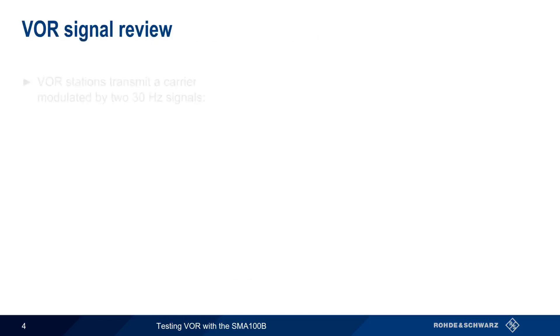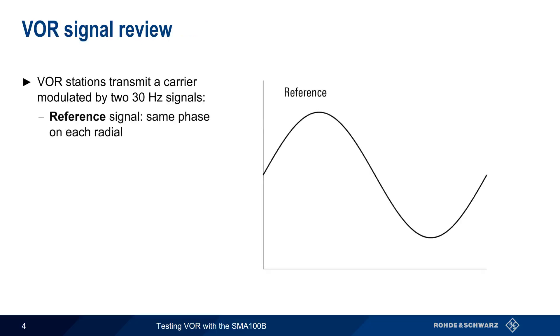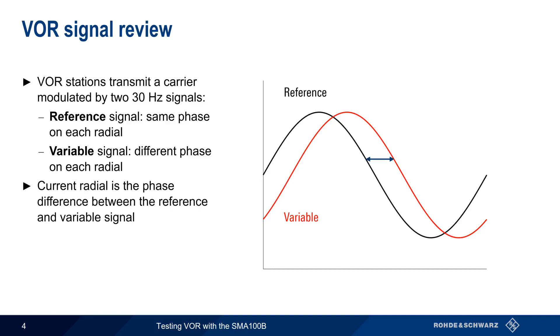Recall that a VOR signal contains a carrier that's modulated by two 30 Hz signals. The reference signal, which has the same phase regardless of which radial we're on, and the variable signal, whose phase is different on each radial. The current radial is the same as the phase difference between reference and variable signal. For example, if the phase difference between reference and variable is 45 degrees, this means that we're on the 45 radial.